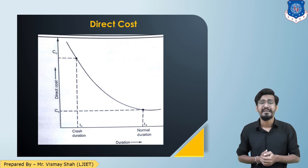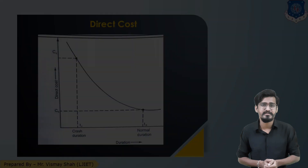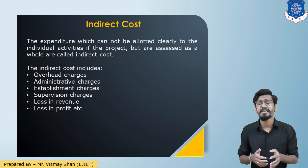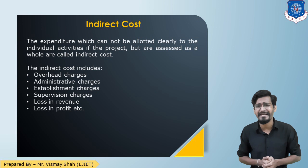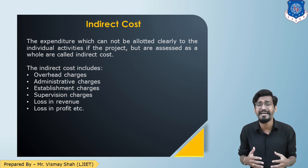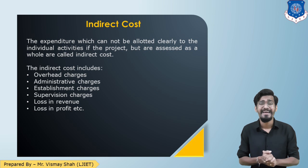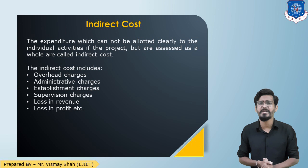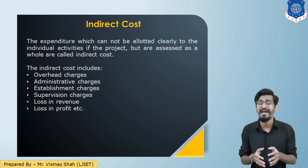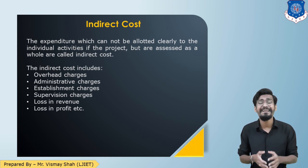The indirect costs are expenditures which cannot be allocated to any specific activity, but can be assessed as a whole. These include overhead charges, administrative charges, supervision charges, establishment charges, loss in profit, loss in revenue, etc. These are some examples of indirect costs.